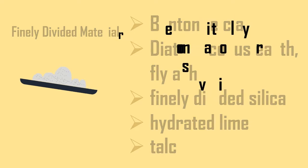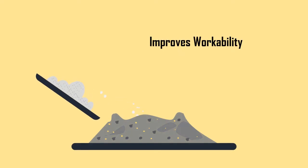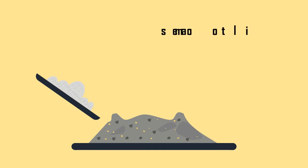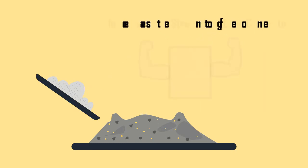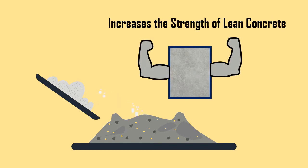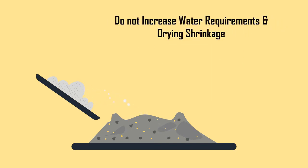The use of finely divided admixtures in appropriate quantity improves workability, reduces the rate and amount of bleeding, and increases the strength of lean concrete. However, these materials do not increase water requirements and drying shrinkage.